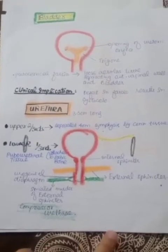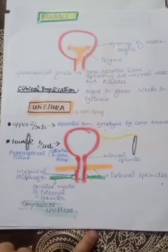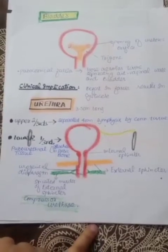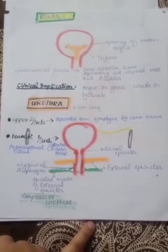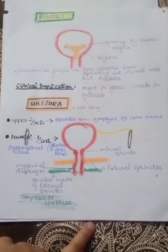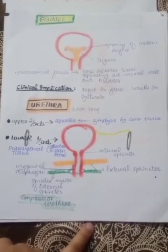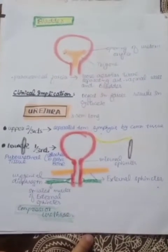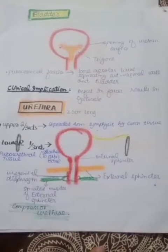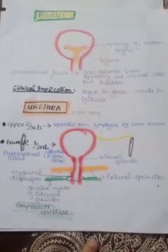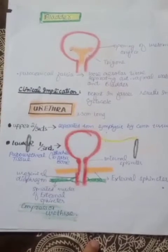The urethra is 3.5 centimeters long. The upper two-thirds of the urethra is separated from the pubic symphysis by connective tissue, while the lower one-third is attached to the pubic bone. So the upper part of the urethra is mobile and the lower part is fixed to the pubic bone.